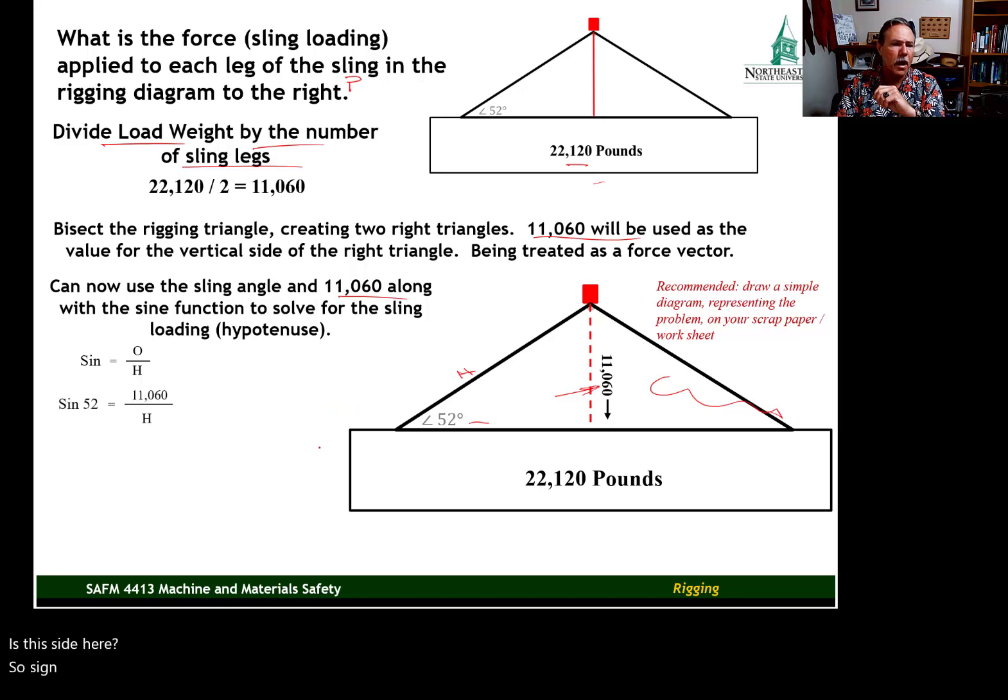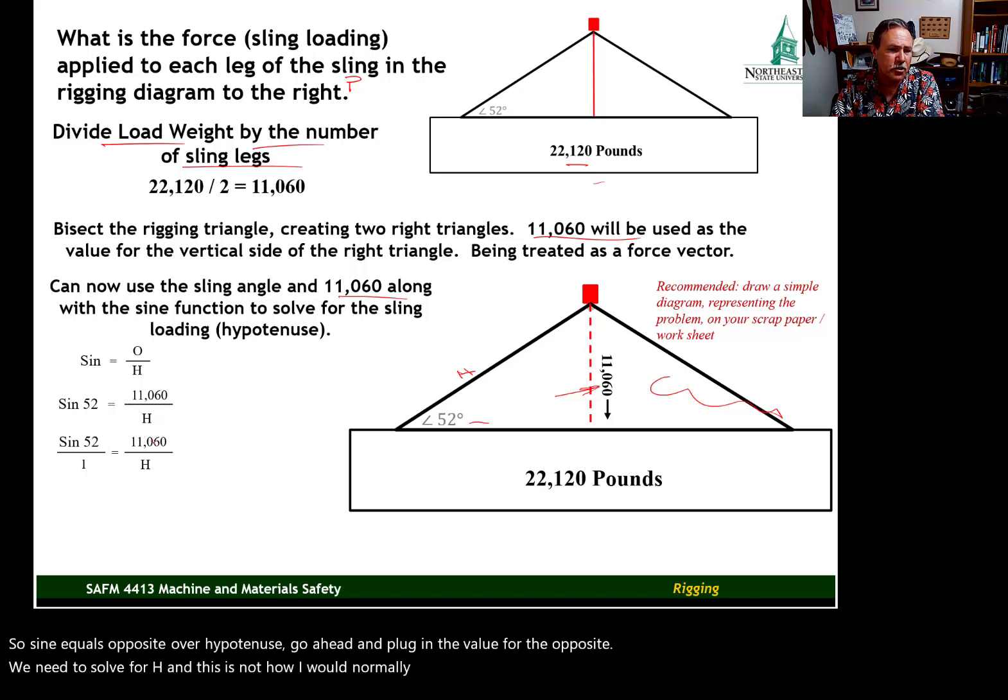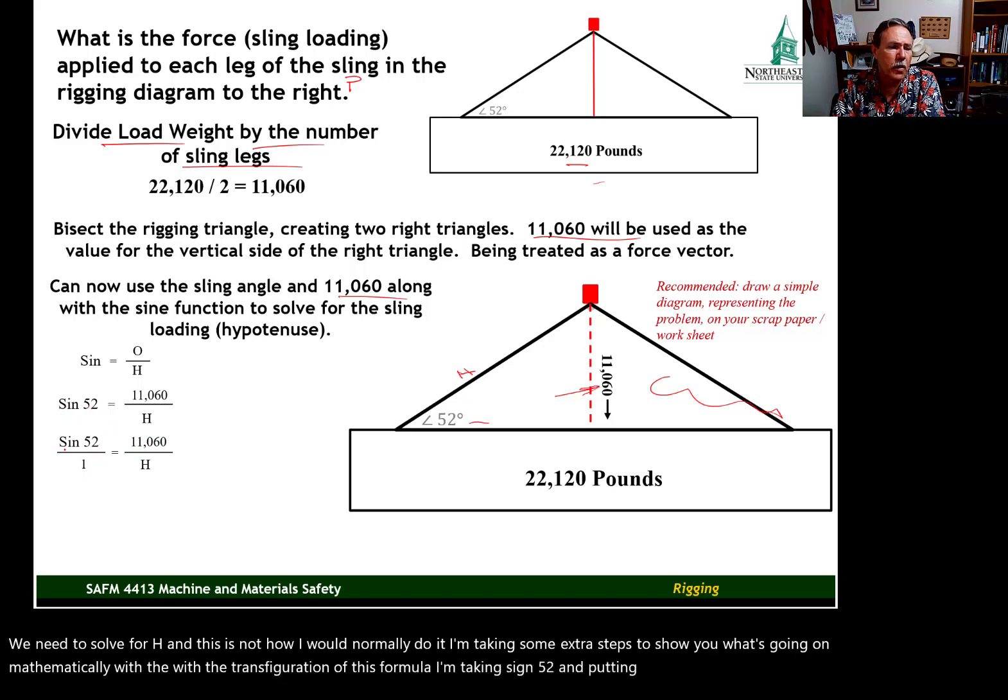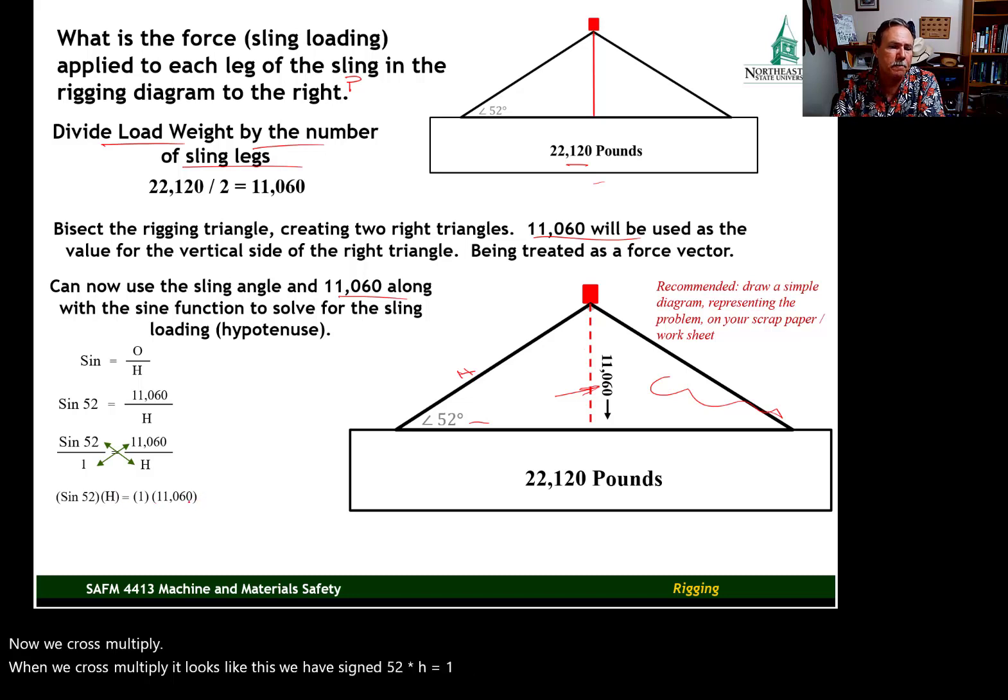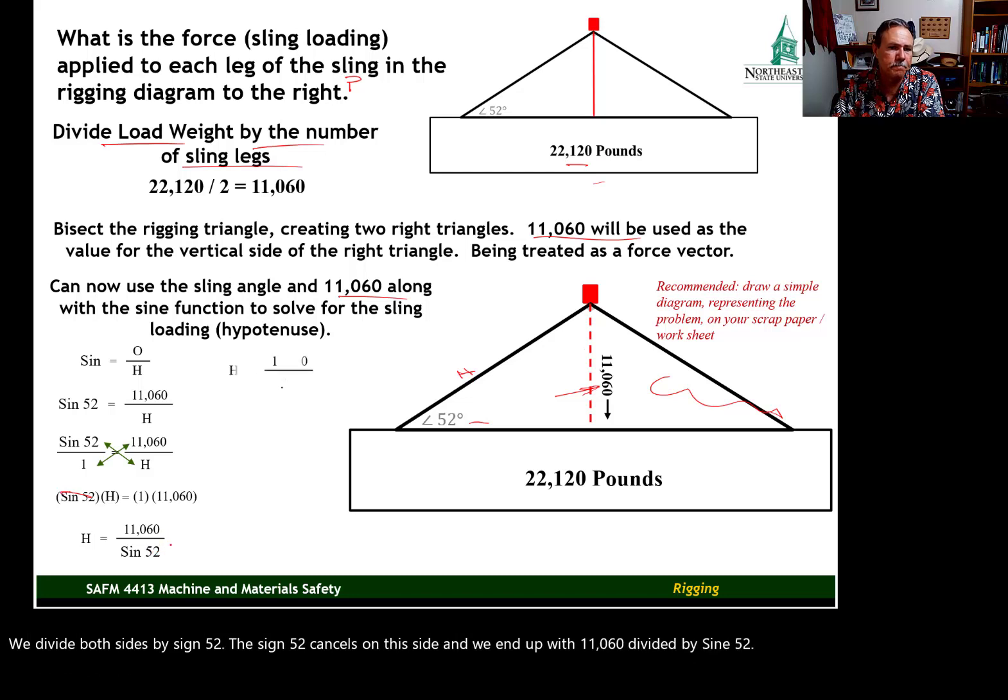So, sine equals opposite over hypotenuse. Go ahead and plug in the value for the opposite. We need to solve for h, and this is not how I would normally do it. I'm taking some extra steps to show you what's going on mathematically with the transfiguration of this formula. I'm taking sine 52 and putting that over 1. So, we have sine 52 over 1 equals 11,060 over h. Now, we cross-multiply. When we cross-multiply, it looks like this. We have sine 52 times h equals 1 times 11,060. We divide both sides by sine 52. The sine 52 cancels on this side, and we end up with 11,060 divided by sine 52.